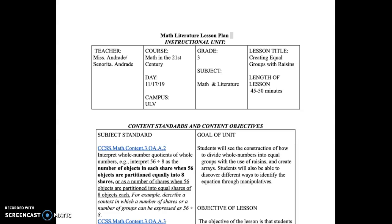The lesson title is Creating Equal Groups with Raisins. The book that I chose is The Grapes of Math. The length for this lesson would be an estimate between 45 to 50 minutes, just because of setting and going over class behavior.